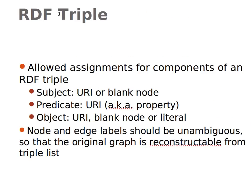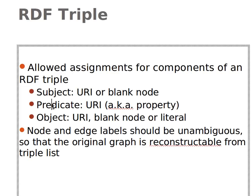Going back to the triple: every RDF triple has a subject, predicate, and object. The subject is the first part, the predicate is the middle part, and the object is the third part. The subject can be a URI or a blank node. The predicate — also known as a property — can be a URI. The object can be a URI, a blank node, or a literal. The node and edge labels should be unambiguous so the graph can be reconstructed from a list of triples.